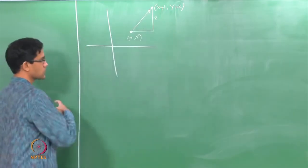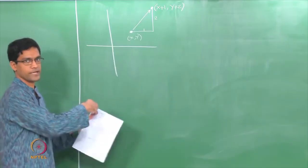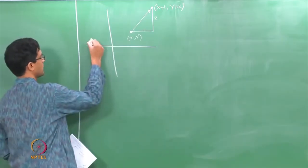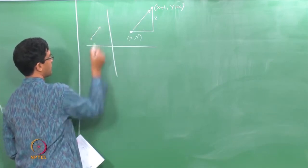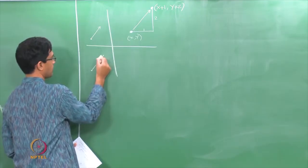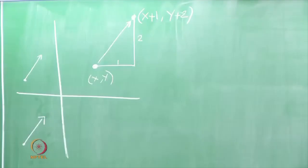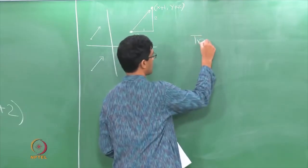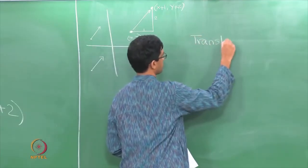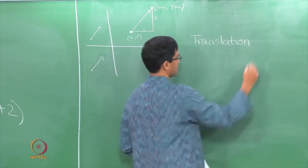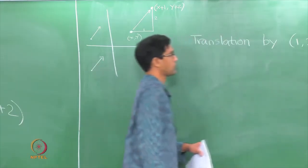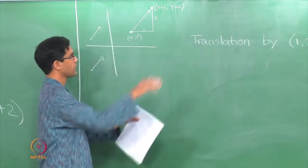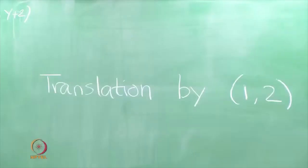It does this uniformly — it does this to every single point on the plane, taking it and moving it by the same distance in the same direction. So it takes this point and moves it parallelly, and similarly every other point also moves parallelly. This map is called a translation, and it is a translation by the vector (1, 2) — it translates everything 1 unit to the right and 2 units above.